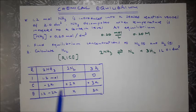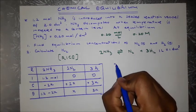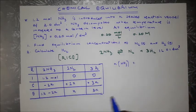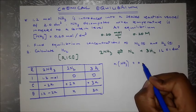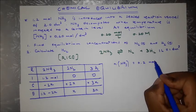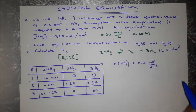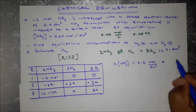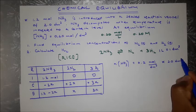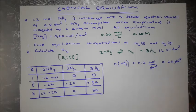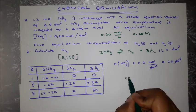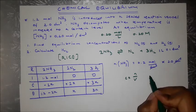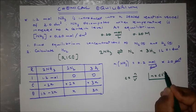We need to find the number of moles of NH₃ at equilibrium. We're given the concentration as 0.20 mol per dm³. The formula is C = n/V, so n = C × V. The volume is 2.0 dm³, so n = 0.20 × 2.0.